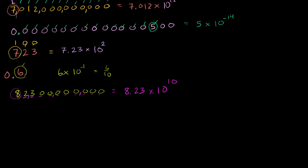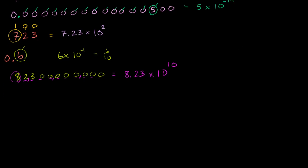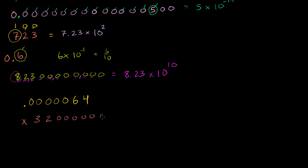Let me do a couple more computation examples. Let's make something really small — 0.000064. And let me make a large number — let's say 32 followed by a bunch of zeros. So this one you could multiply out, but it's a little difficult. Let's put it in scientific notation — it'll be easier to represent these numbers, and hopefully you'll see that the multiplication gets simplified as well.